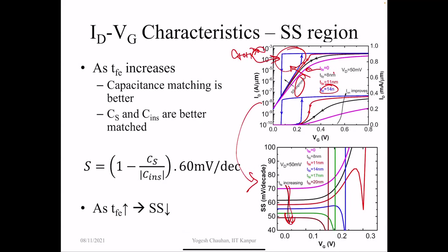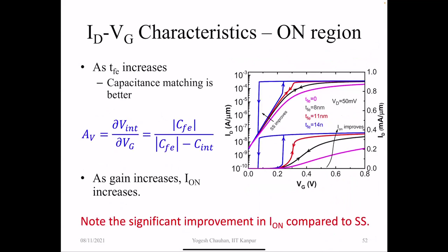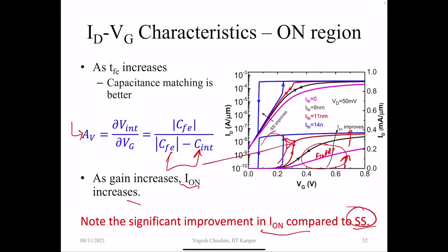As we increase T_FE, sub-threshold swing improves to less than 60 mV/decade — we can achieve that. In the on-region, in the linear plot, as we increase T_FE the on-current improves. The gain increases as capacitance matching improves, giving larger on-current — a significant improvement. There is improvement both on log scale (sub-threshold swing) and linear scale (on-current). This has been experimentally demonstrated in several papers showing 33 mV/decade and even better characteristics.